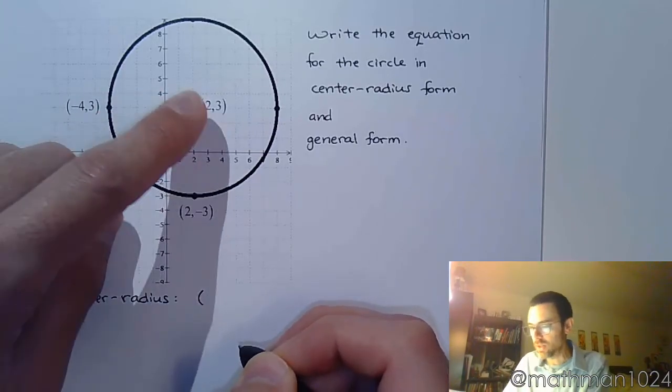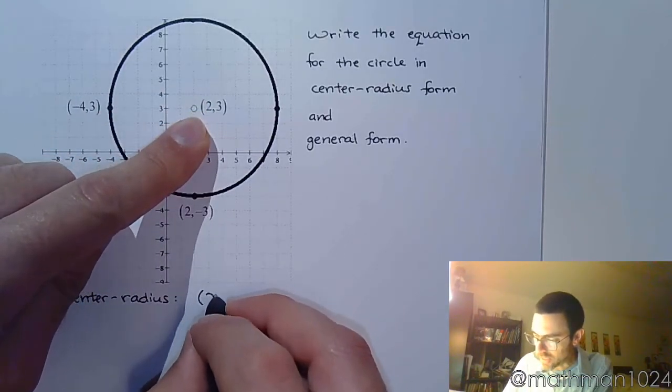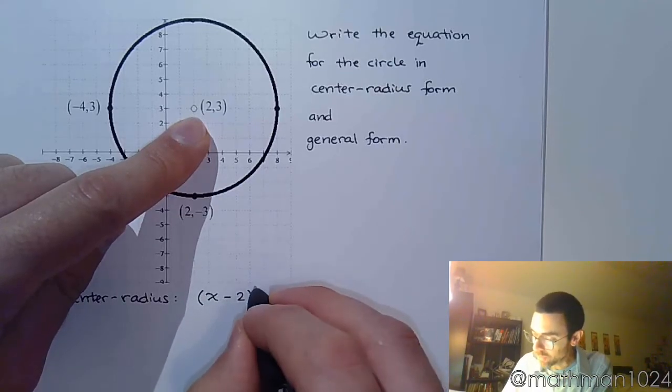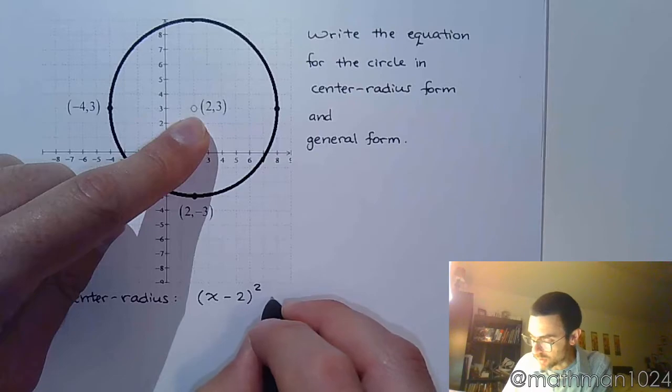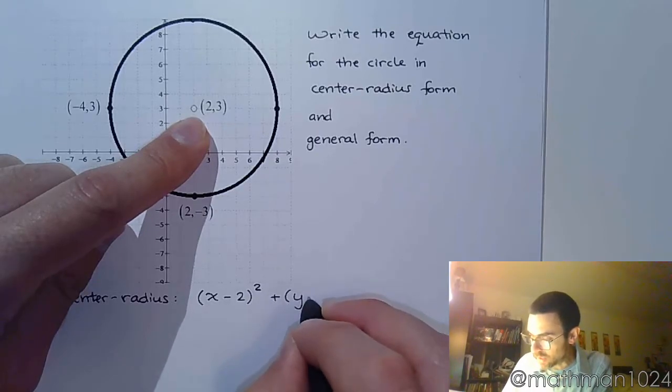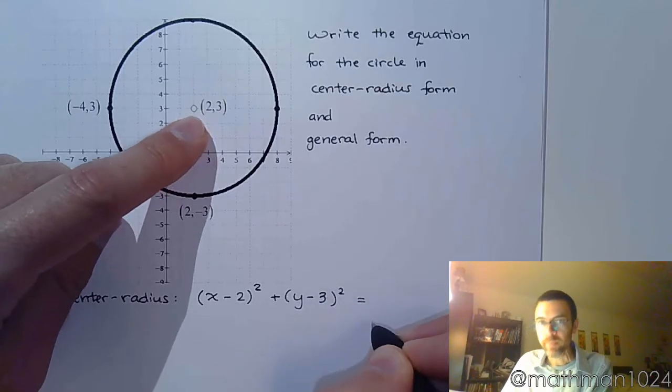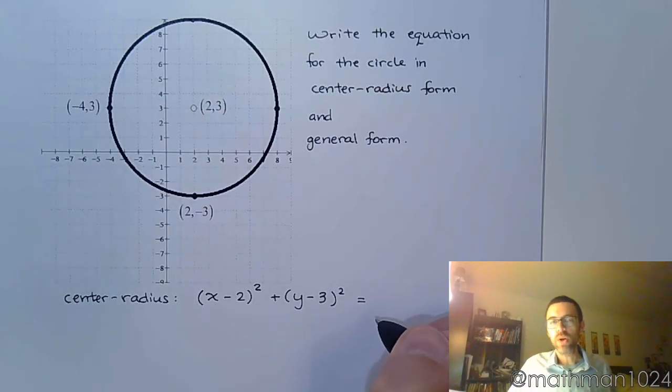So my center is (2, 3), so that means it's going to look like x minus 2. Remember how we talked about doing the opposite of that? So that's going to be (x - 2)² plus (y - 3)², but it's supposed to equal the square of our radius.